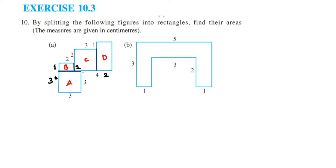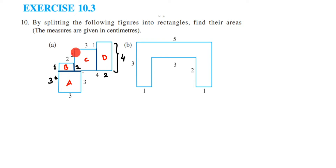Since this side is 3, the parallel side is also 3. On top we have 1 more, so 3 plus 1 equals 4 — the whole side becomes 4. Similarly, this side is 3 and parallel to it is also 3, with 1 on top, giving 4. Now we have the dimensions for all the figures.